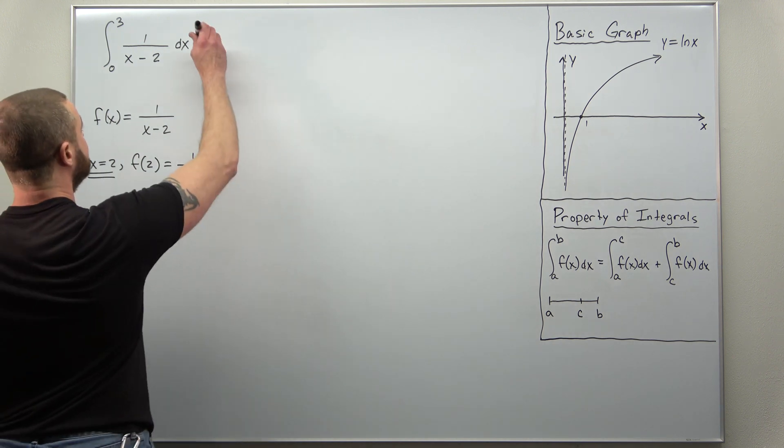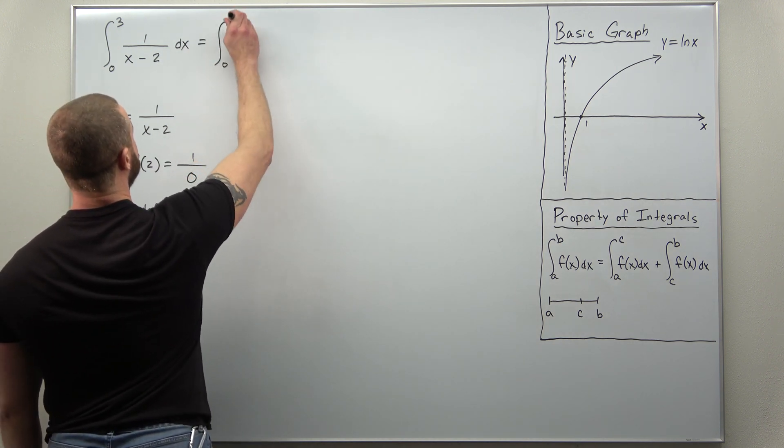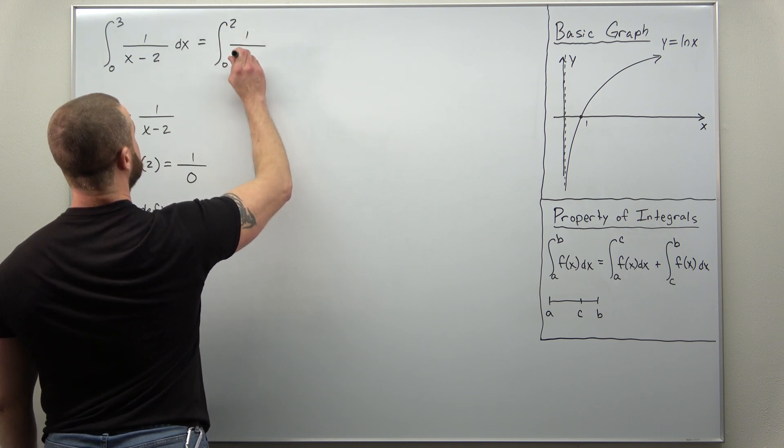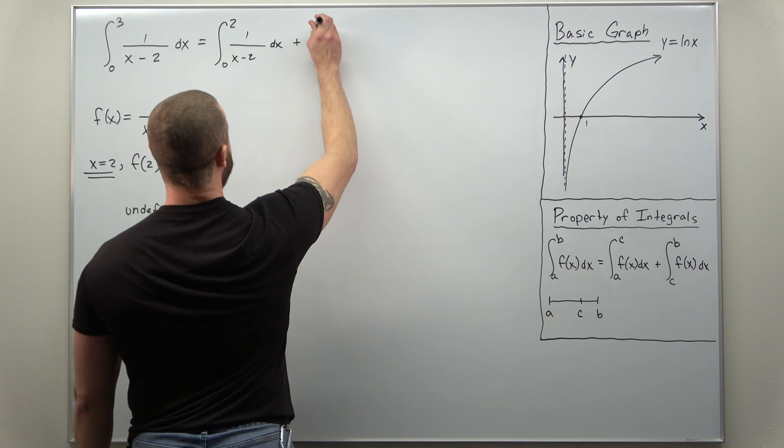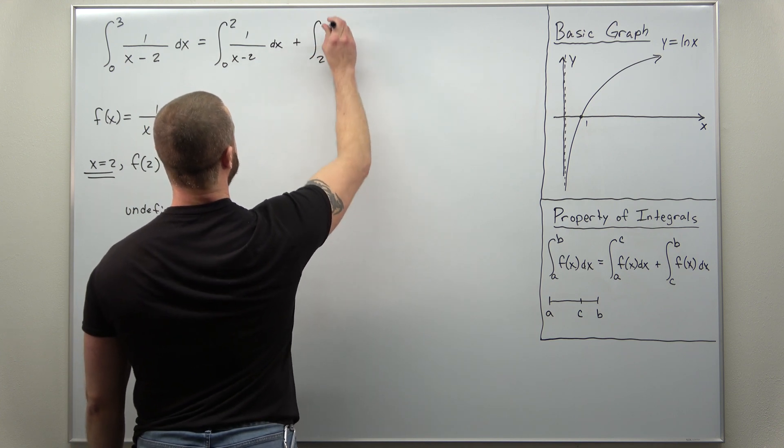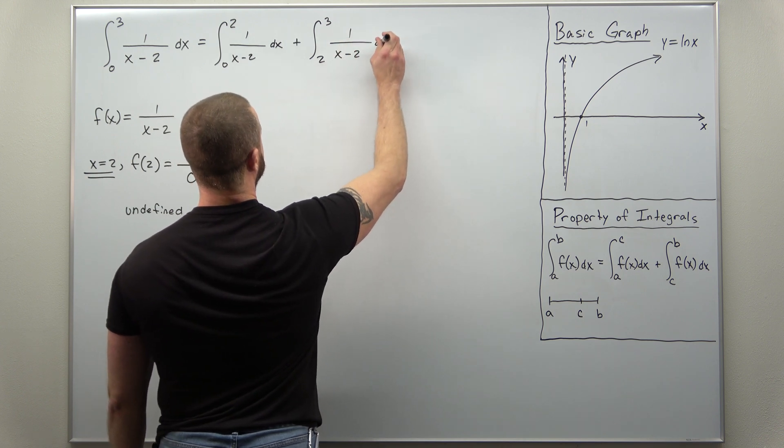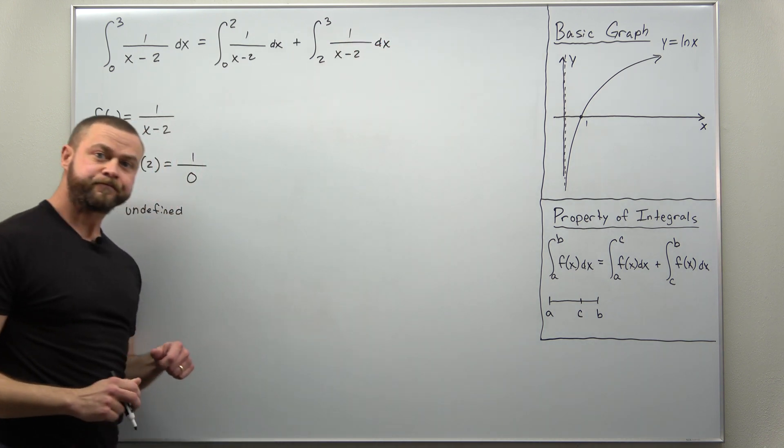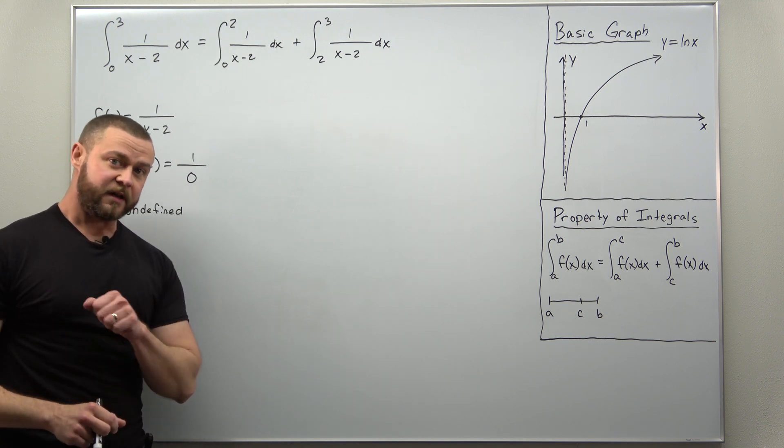So we're going to get the integral from 0 to 2, keep the function the same, and then we add to that the integral from 2 to 3 of the same function. By doing this, it's a little bit more obvious.